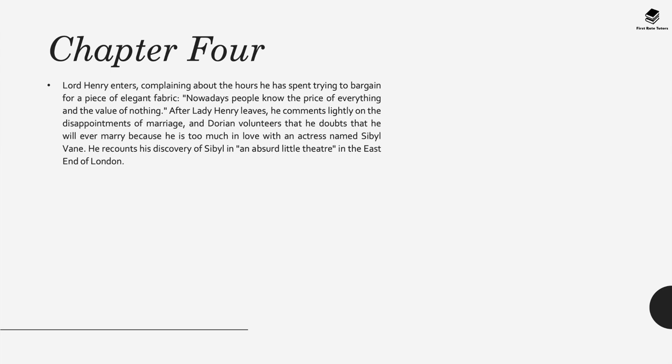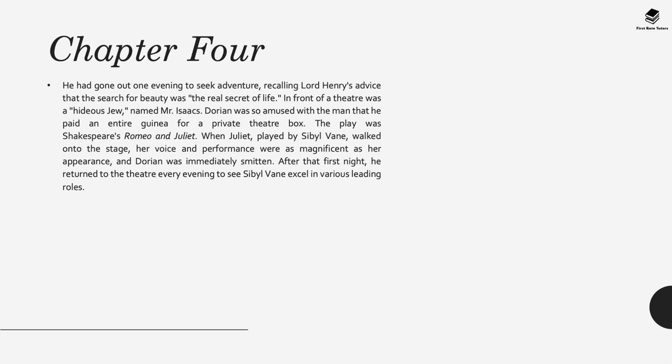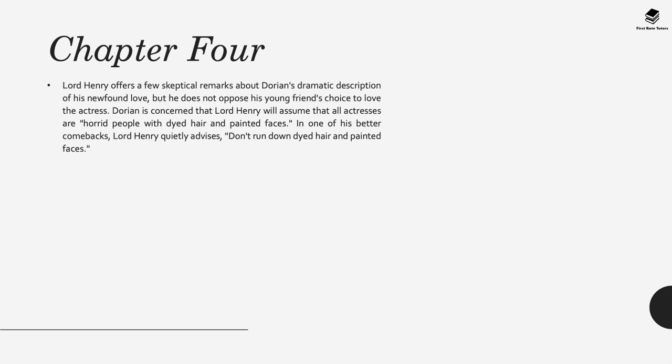Dorian recounts his discovery of Sybil in an absurd little theatre in the East End of London—at the time a very run-down area that gentlemen were not supposed to frequent. He had gone out one evening to seek adventure, recalling Henry's advice in search of beauty. In front of the theatre there was, as the novel says, 'a hideous Jew named Mr Isaac.' Dorian was so amused with this man that he paid an entire guinea for a private theatre box, where he witnessed Sybil Vane replay Romeo and Juliet and was so entranced by her magnificent performance that he was immediately smitten. Lord Henry then offers a few sceptical remarks about Dorian's dramatic description of his newfound love, but doesn't oppose his young friend's choice to love the actress.